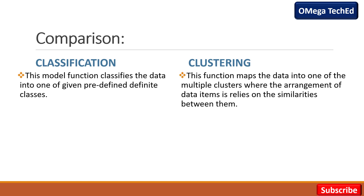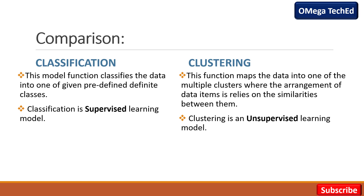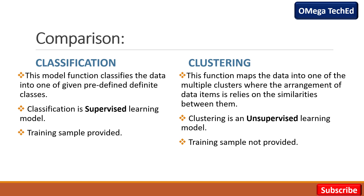Clustering this function maps the data into one of the multiple clusters where the arrangement of data items relies on the similarities between them. Clustering میں ہمیں پتہ نہیں ہوتا کہ number of clusters کتنے بنیں گے — یہ totally depend کرتا ہے data items کے بیچ similarities پر۔ Classification supervised learning کی example ہے کیونکہ یہاں label data set use ہوتی ہے، جبکہ clustering میں unlabeled data set use ہوتی ہے اور کوئی training sample نہیں ہوتا۔